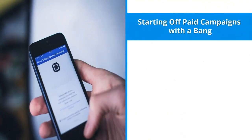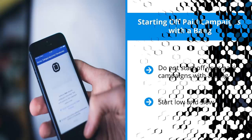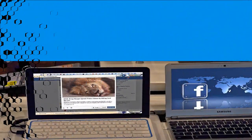Mistake one: starting off paid campaigns with a bang. Do not start off your paid campaigns with a bang. Start with a free campaign first. Build your audience organically. Get some consumer intelligence. Then you should have the information you need to put together an experimental paid marketing campaign. Start low and slow. The worst thing you can do is to jump in with a massive budget and absolutely no clue.